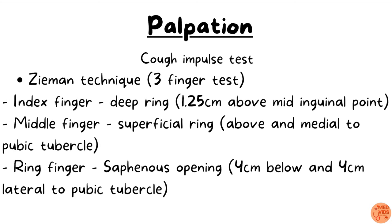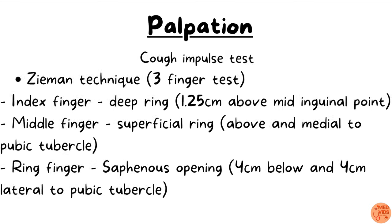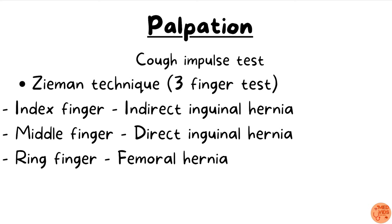The Zieman technique — also known as the three-finger test — uses three fingers: the index finger is placed on the deep ring (1.25 cm above the mid-inguinal point), the middle finger on the superficial inguinal ring, and the ring finger on the saphenous opening (4 cm below and 4 cm lateral to the pubic tubercle). After reducing the swelling, ask the patient to turn their head and cough. If the impulse is felt at the index finger, it suggests indirect inguinal hernia; at the middle finger, direct inguinal hernia; and at the ring finger, femoral hernia.